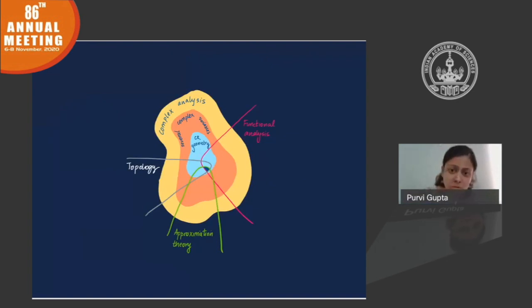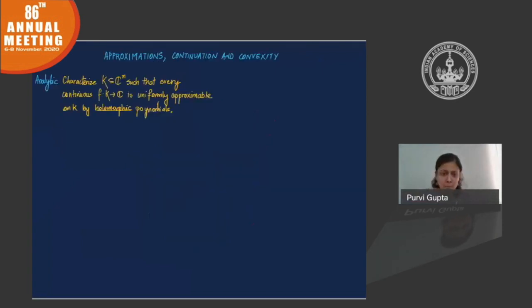Let me now get to the actual question. I want to start with an analytic question, which is a very classical problem in approximation theory. You want to understand, you want to characterize all those compact subsets of C^n, which have the following property: that every complex valued continuous function on that set can be approximated uniformly by holomorphic polynomials. In other words, one is looking for some kind of a finite basis of a certain algebra of functions.